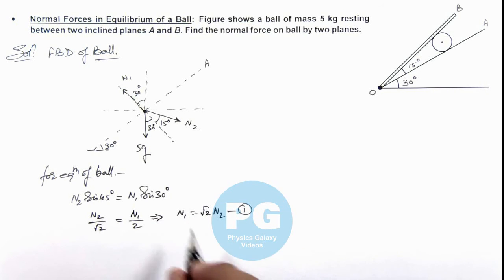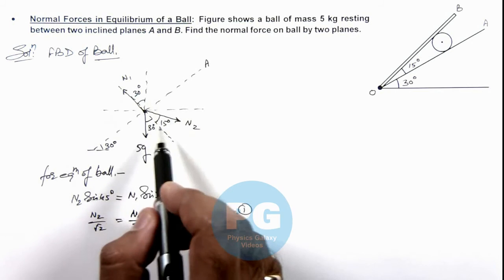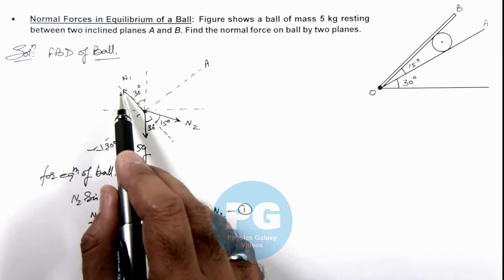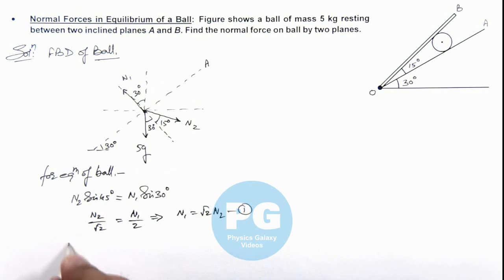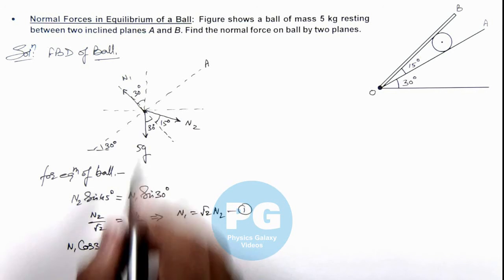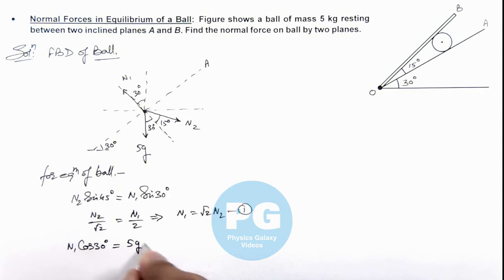And another equation in the vertical direction we can write, that is N₁ cos 30° is balancing the downward forces, which is 5g plus N₂ cos 45°. On substituting the trigonometric ratios, this will give us N₁√3/2 equals 5g plus N₂/√2. That is, say, our equation 2.